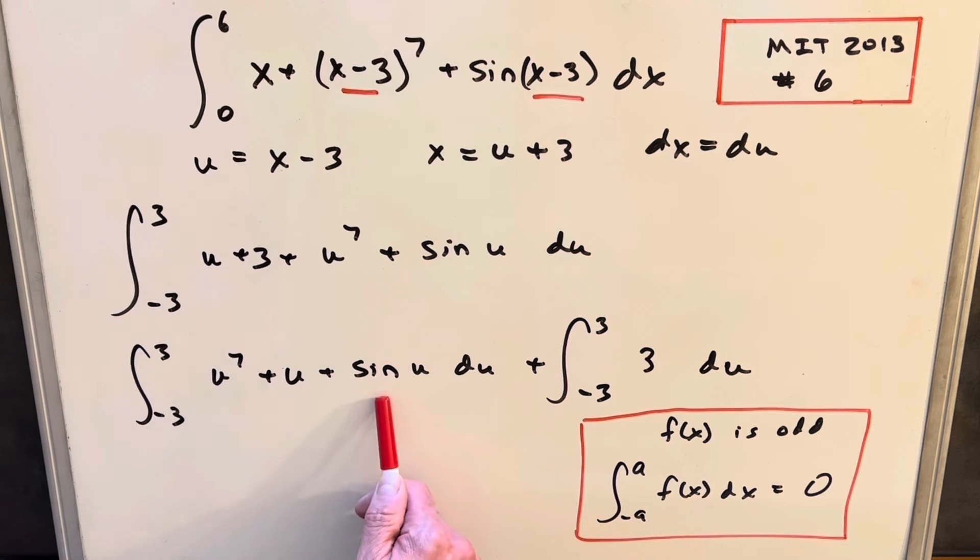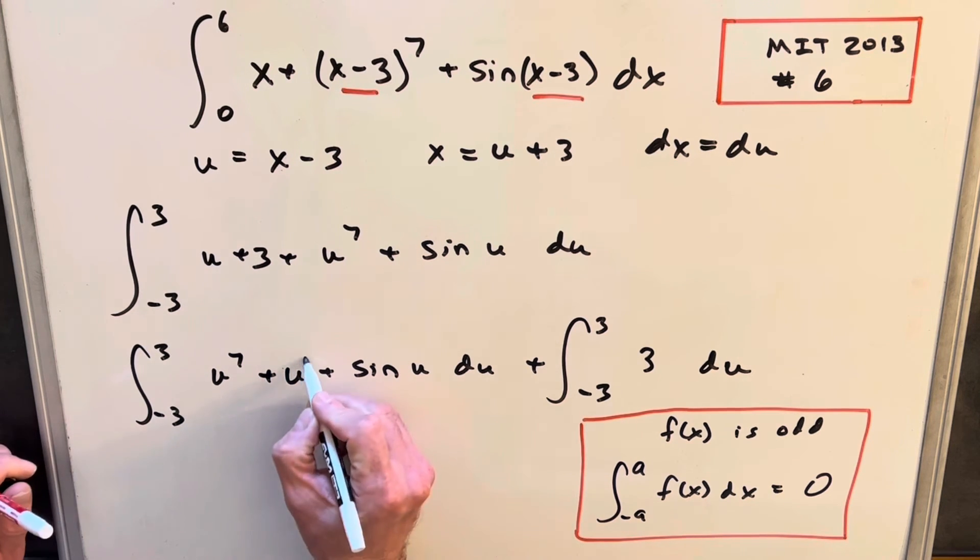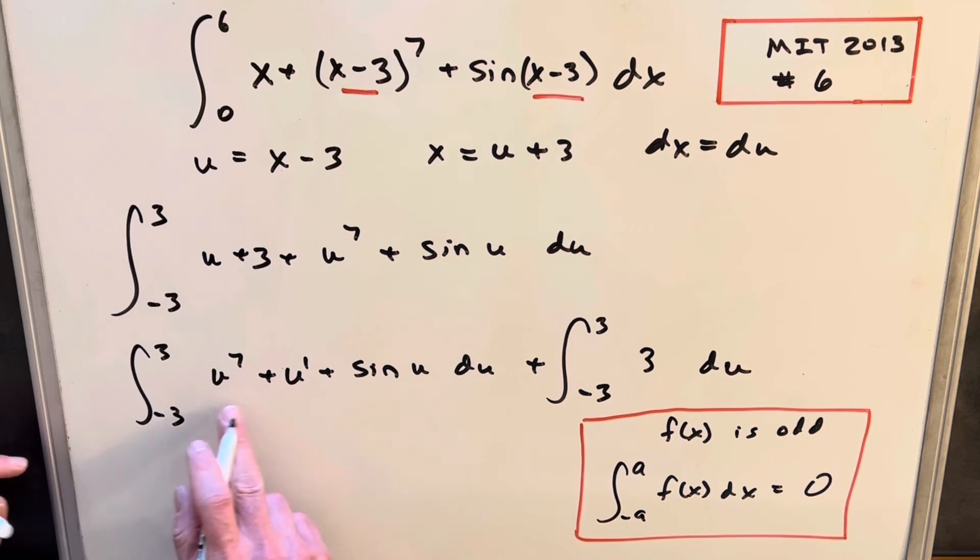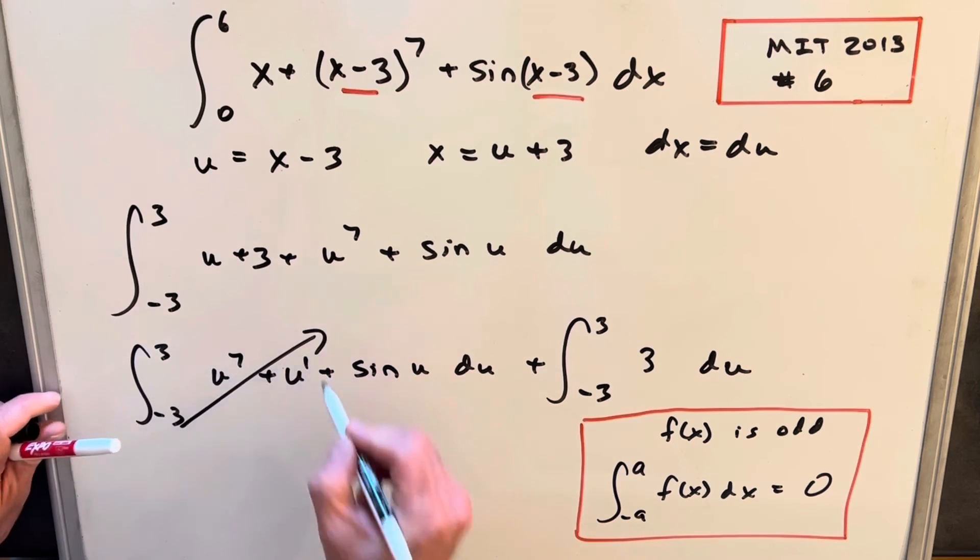And one thing on these, so sine is a known odd function, but also these have an odd power. So when you have an odd power like that, that's an odd function. So because all this on the left is odd, this whole piece is going to 0, and all we have to do is integrate 3.